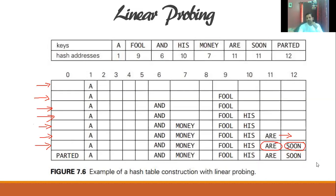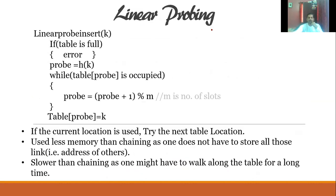Insertion is not an issue in linear probing, but deletion causes a problem. For example, if we delete word 'r' — its hash value is 11 — we delete it. Then if we search for 'soon', its hash value is also 11. We go to index 11, but it's now empty. The search concludes the word doesn't exist, but it actually does exist at index 12. This is a limitation of linear probing.